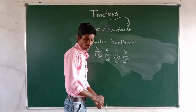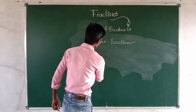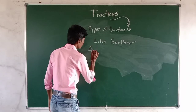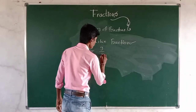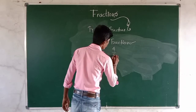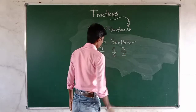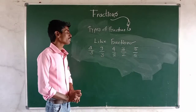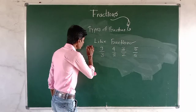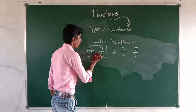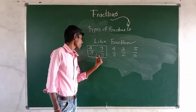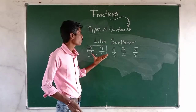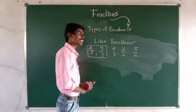Suppose we take the example: 4 by 3, 9 by 3, 4 by 8, 3 by 2, and 5 by 6. Among these, 4 by 3 and 9 by 3 are like fractions because they have the same denominator, which is 3. The fractions which have the same denominator are called like fractions.